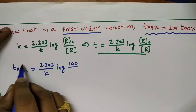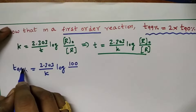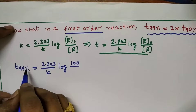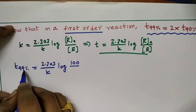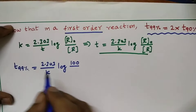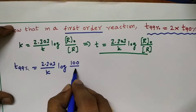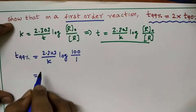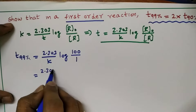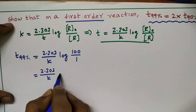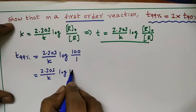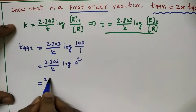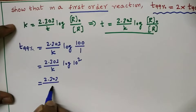t99% indicates that 99% of the reactant is consumed, or 99% of the reaction is completed. So the remaining concentration is 100 − 99 = 1. Therefore: t99% = 2.303/k × log(100/1) = 2.303/k × log(10²).